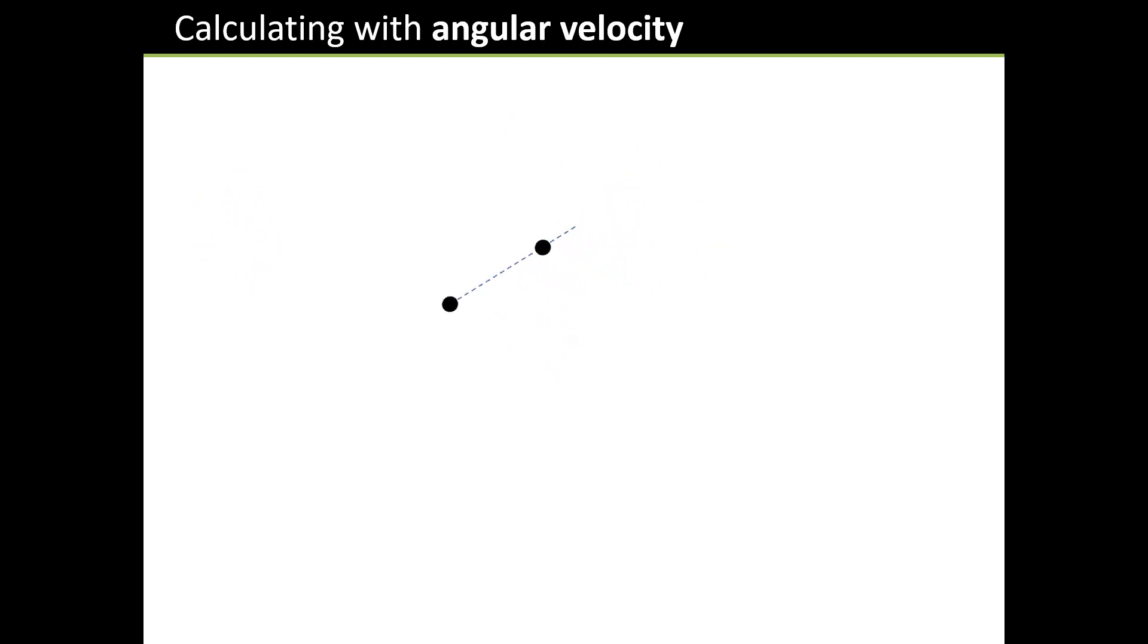Have a look at this picture here. Both of these dots are moving around with the same angular velocity. You can tell because they're on the same line. But it's pretty obvious that the outer one is going faster.